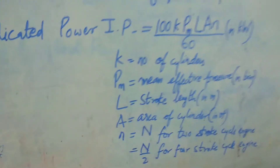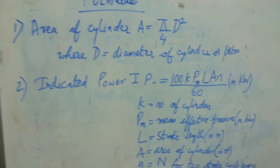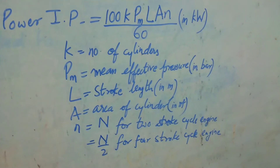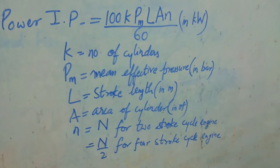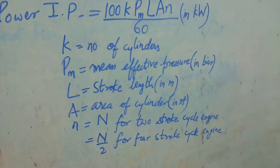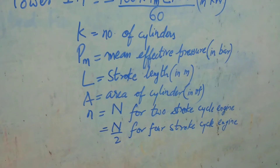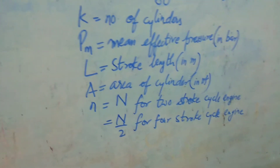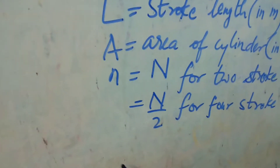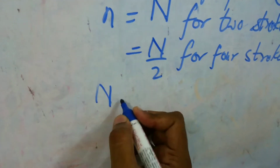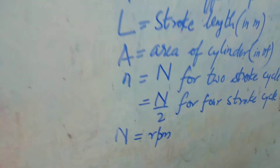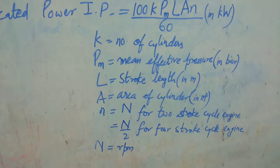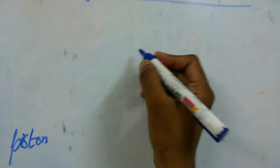So to summarize: area of cylinder and indicated power IP = 100 × k × pm × L × A × n / 60, where small n equals capital N for a two-stroke engine and N/2 for a four-stroke engine, and N is RPM. Now we will look at brake power.